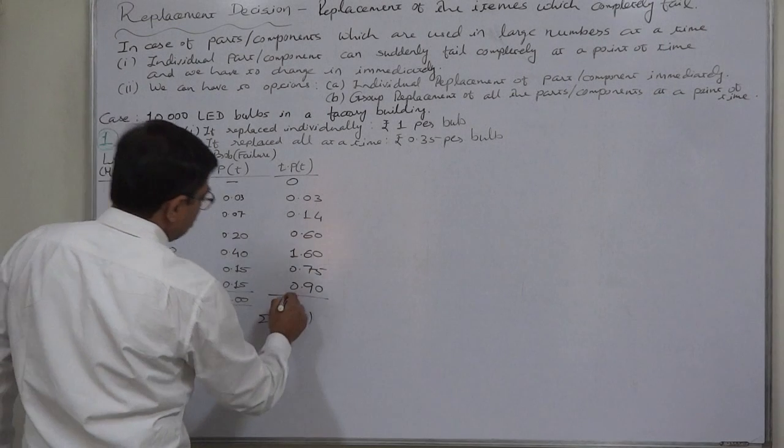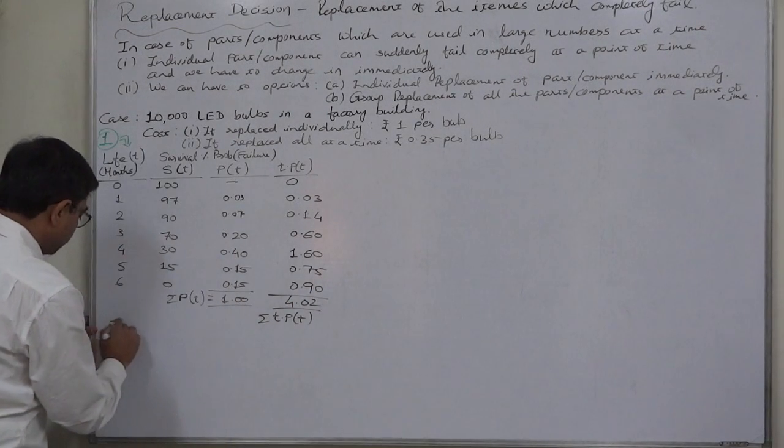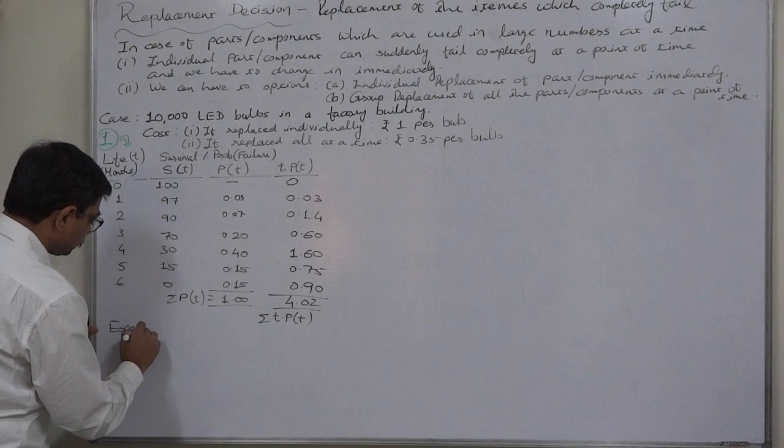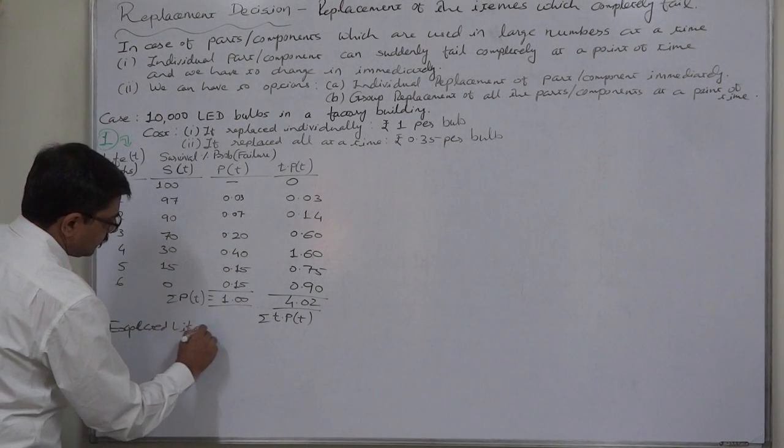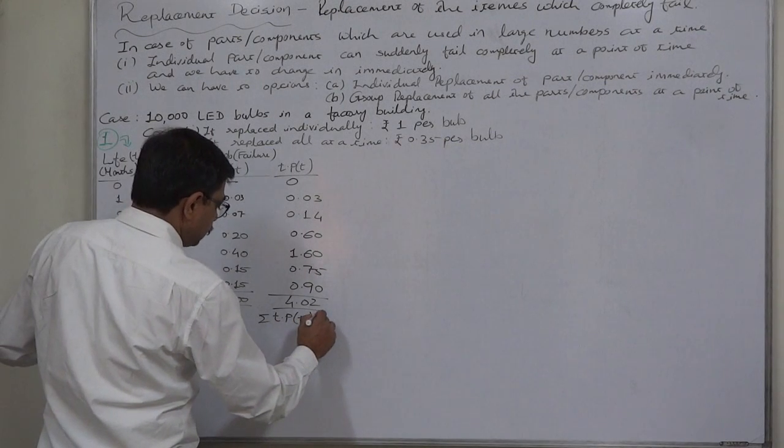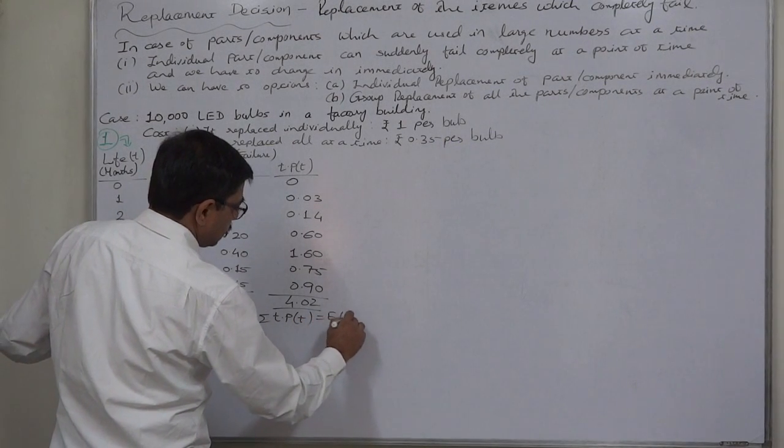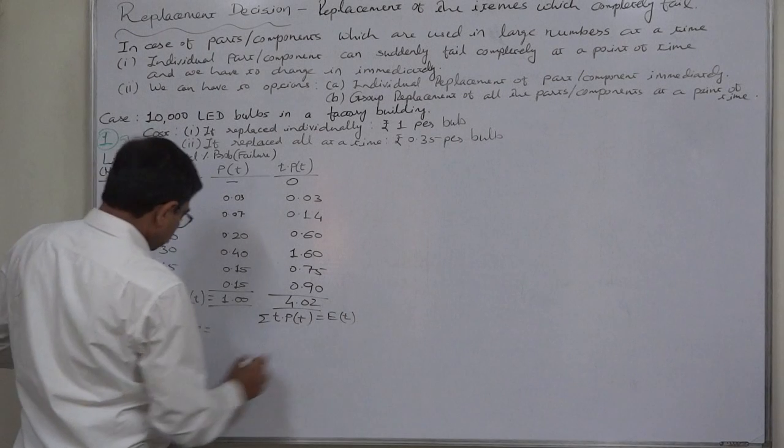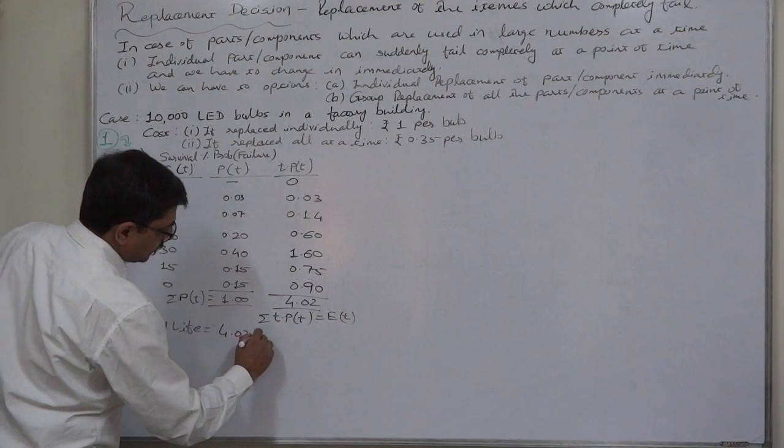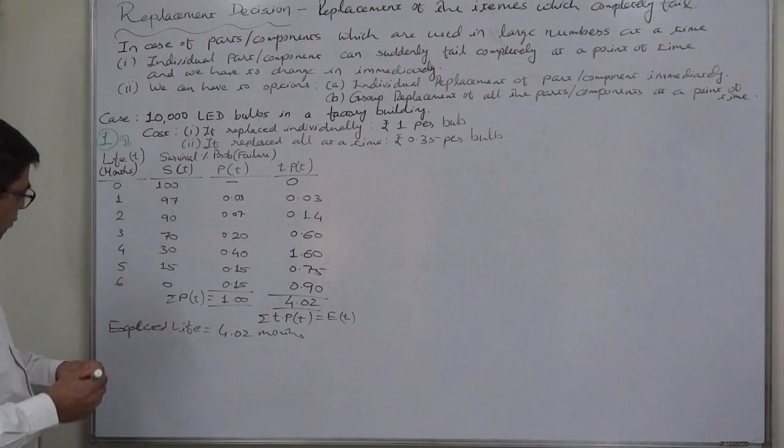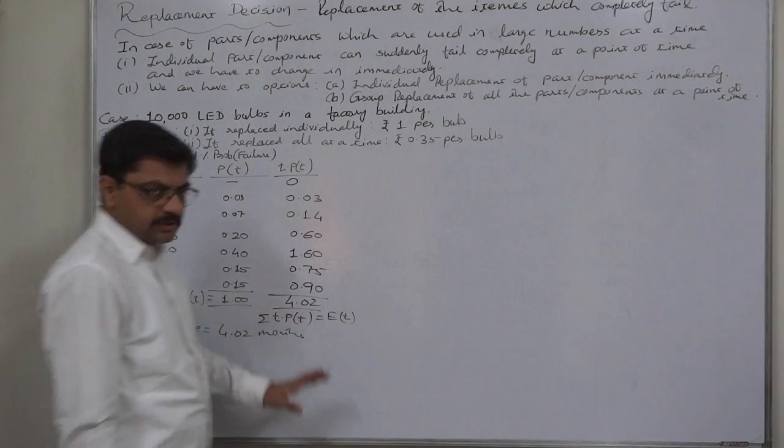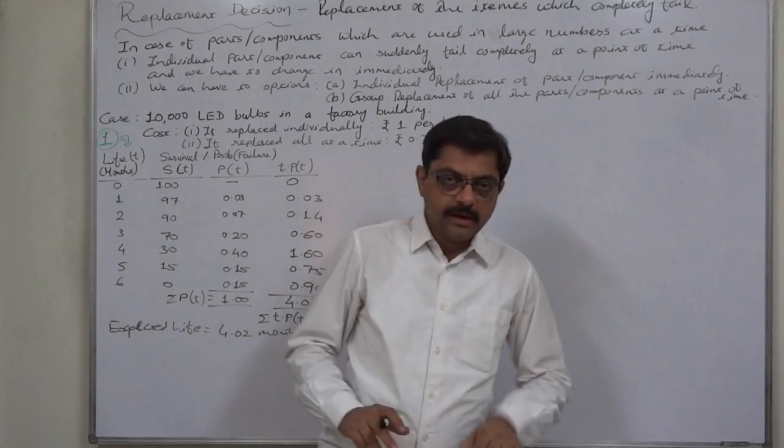So expected life is equal to 4.02 months. On an average, we can expect life of approximately 4 months of a bulb. Now on the basis of this, we can calculate average monthly failures.